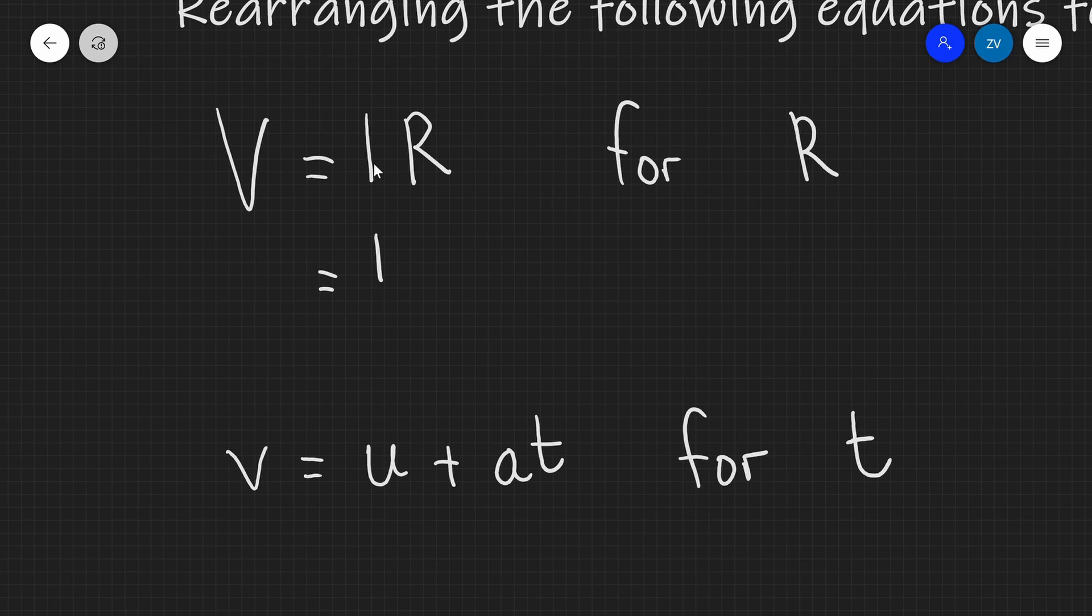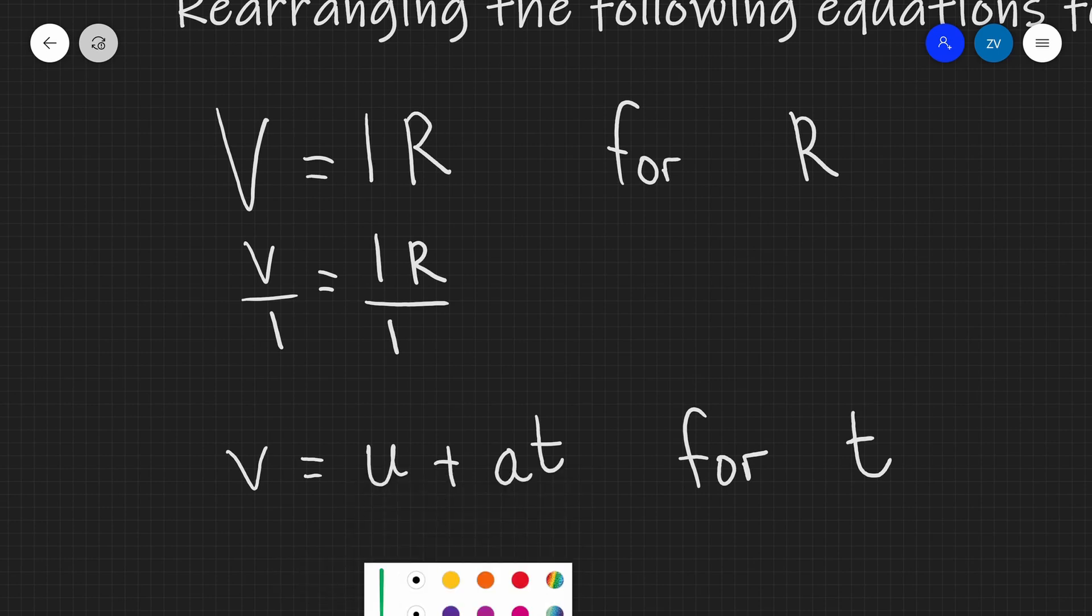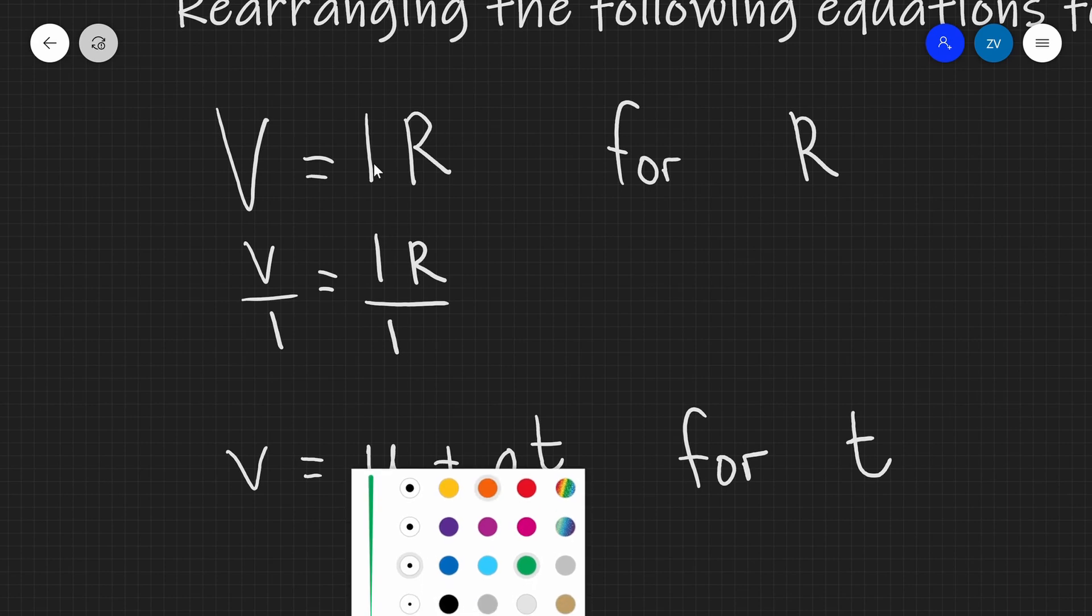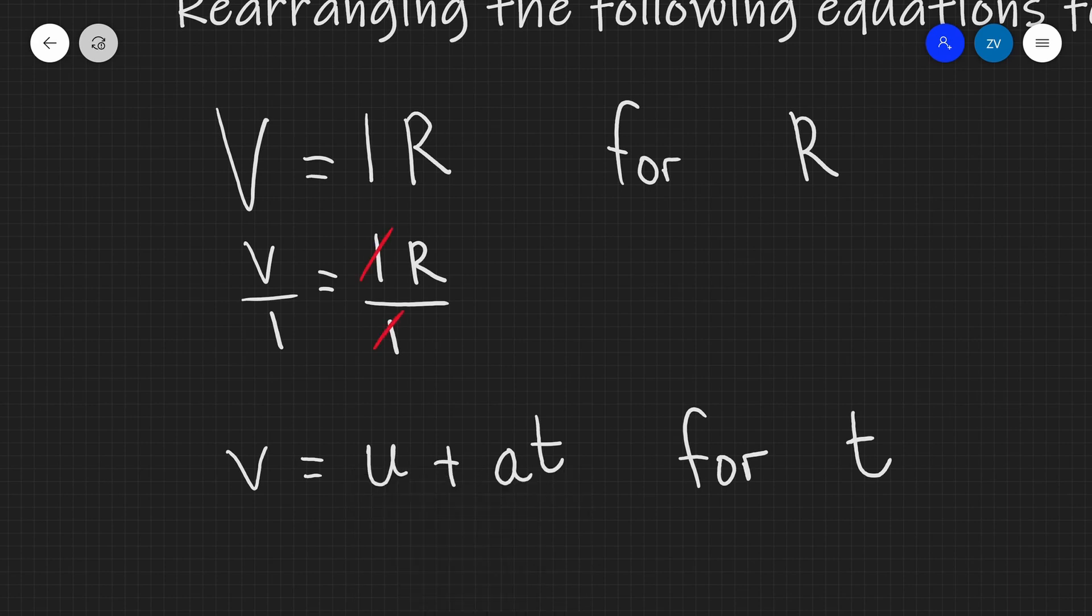Now, this is going to give me IR on the right, divided by I, like so, and I'm going to have V divided by I as well. So, this means that I can cancel out the I's on the right-hand side, like so. Let's use my red cancelling pen, so that gets cancelled. What I'm left with is that R is equal to V over I.